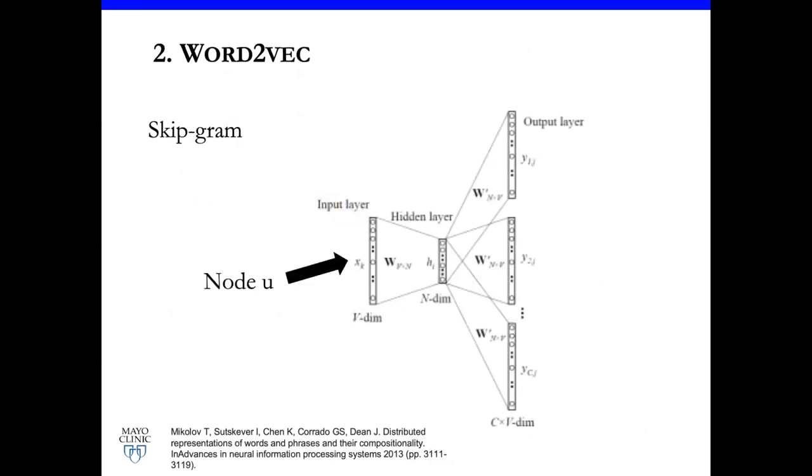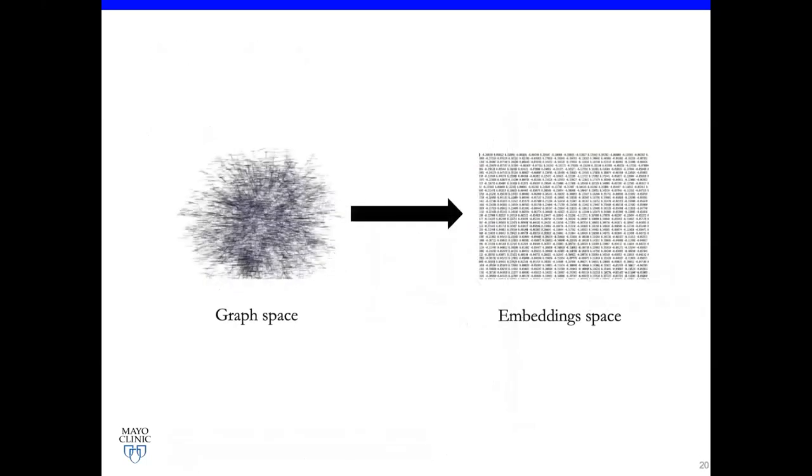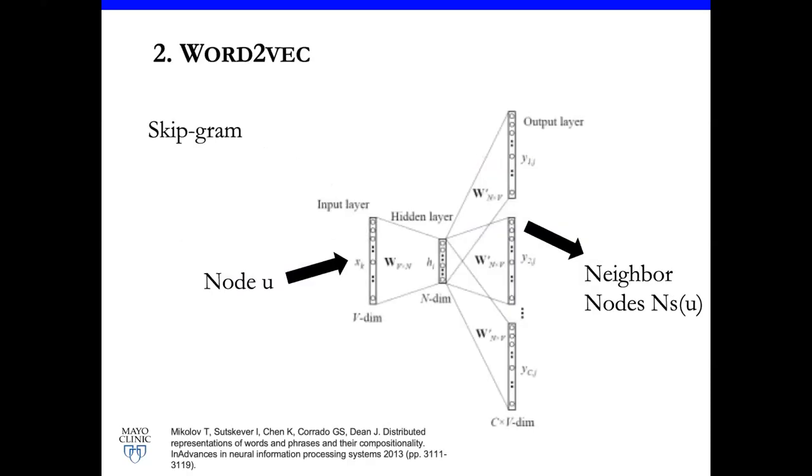We prepare input data, we prepare the context data, neighborhood data, and throw that into the Word2Vec model. Exactly the same. In the code, they just use skip-gram without any modification. Then we have data, we throw it in, and we come up with the embedding. I'm sorry, what was skip-gram? Skip-gram is—Word2Vec has two different modes to generate embedding. One called skip-gram, another one called CBOW, continuous bag of words. There are two different modes to generate embedding.